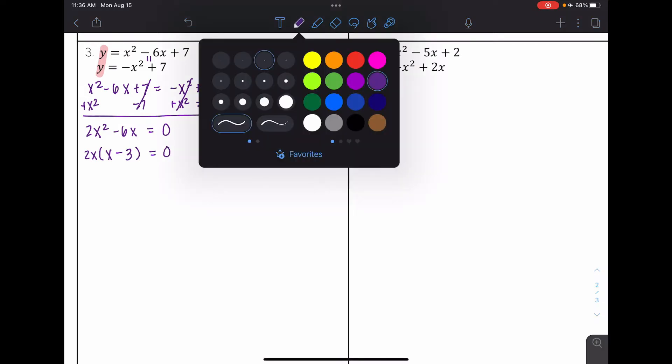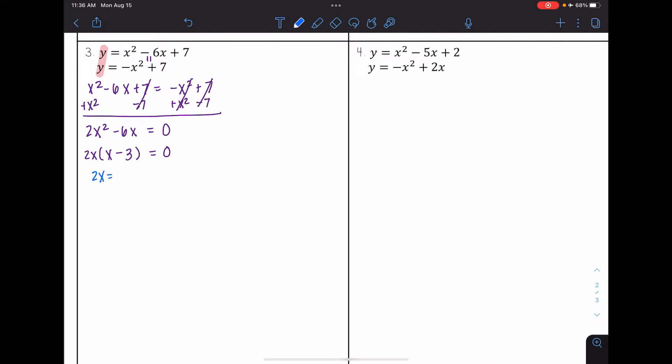And so then solving this, I have that 2x equals 0, or x minus 3 is equal to 0. So divide 2 from both sides, and I get that x equals 0. Add 3 to both sides, and I get that x is equal to 3.